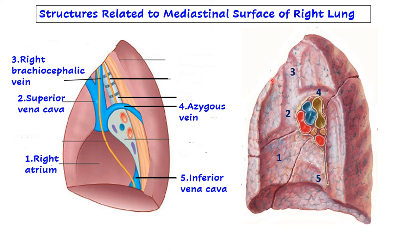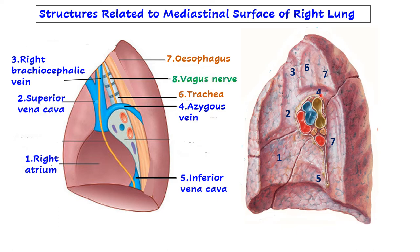Now we have two tubes and two nerves. The tubes: number six is the trachea, and number seven is the esophagus behind the trachea. The impressions of the nerves cannot be seen, but you have to draw the diagram. The phrenic nerve goes in front of the hilum, and on the side of the trachea you can see the vagus nerve going posteriorly.